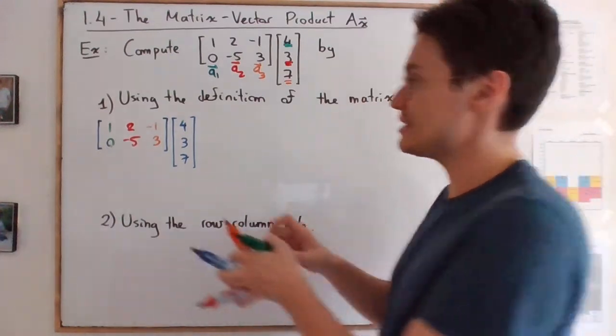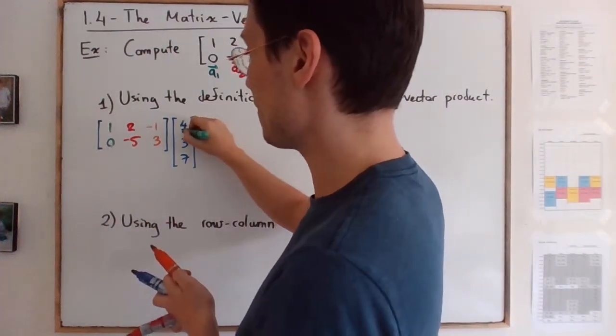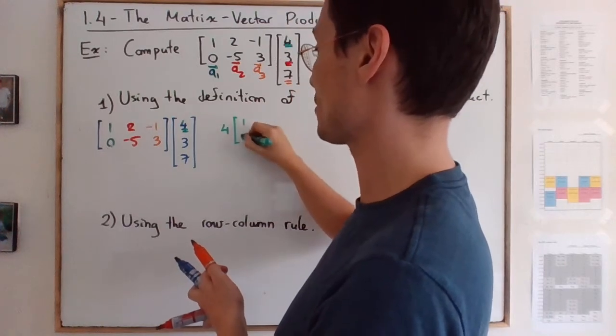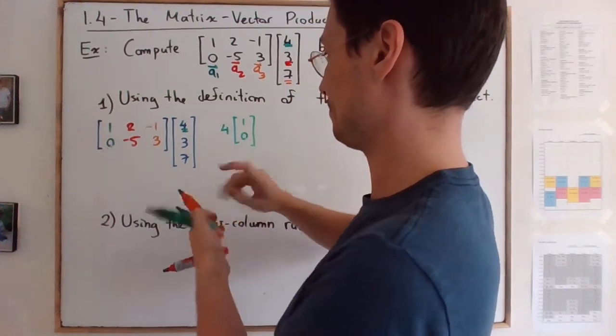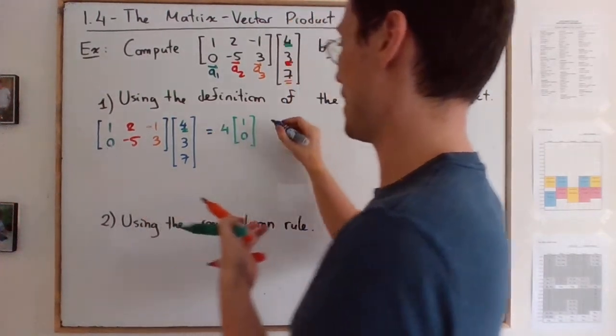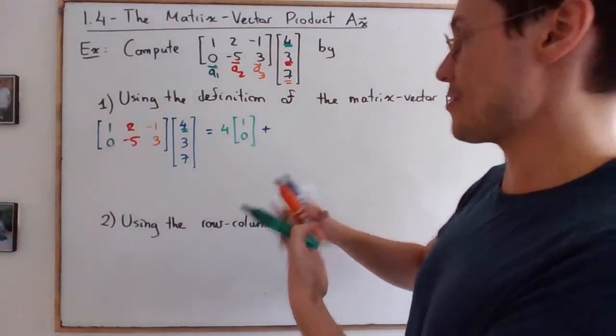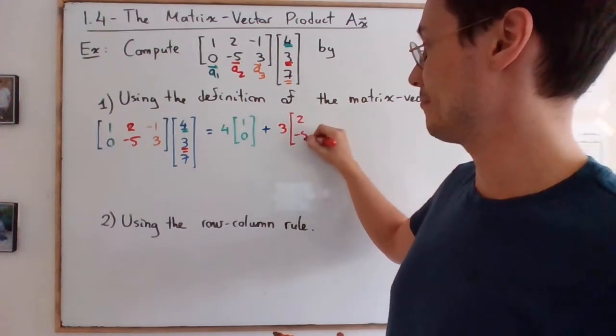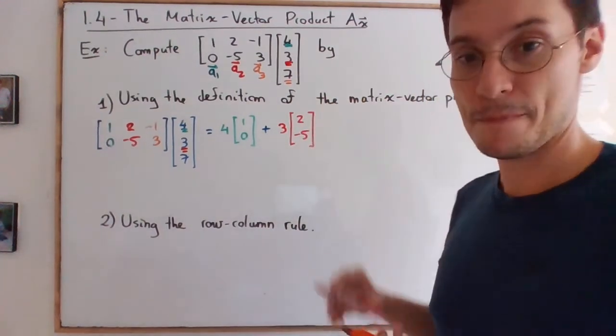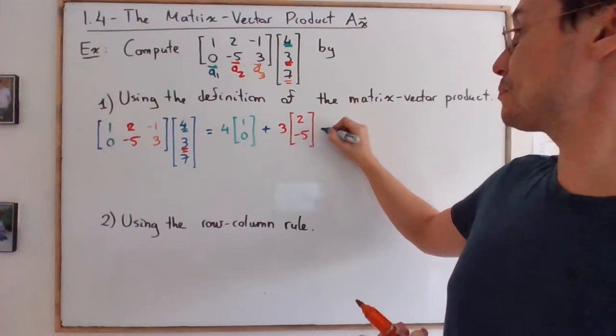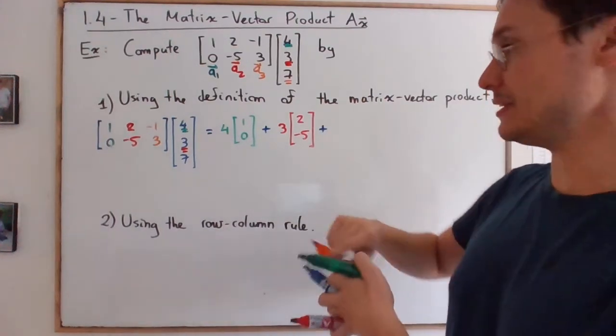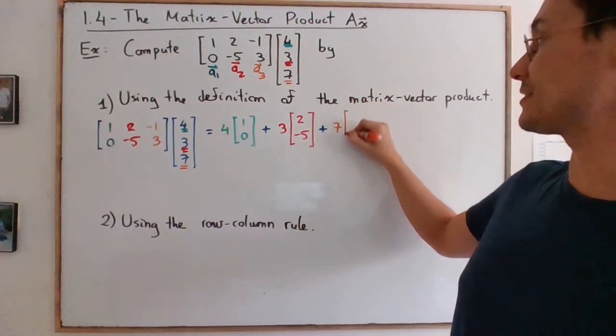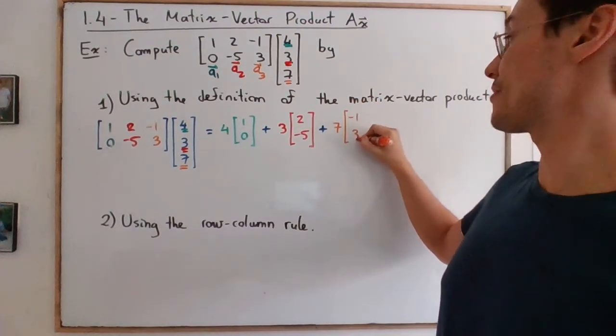But the idea is really, it's going to be 4 times the vector A1. So 4 times the vector 0, 1, plus 3 times the vector 2, negative 5, plus 7, so this 7 right here, 7 times the vector negative 1, 3.